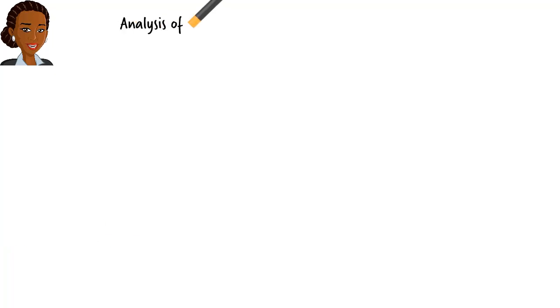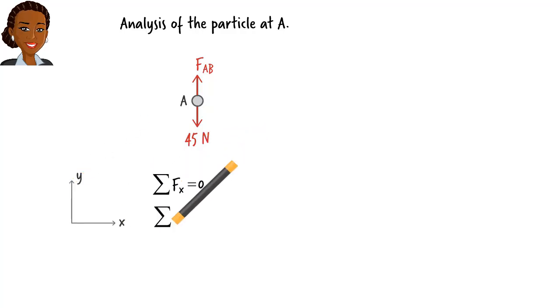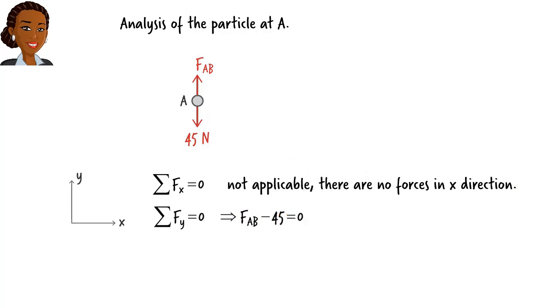Here is particle A and the forces that are acting on it. We have a downward force of 45 Newtons, and an upward force with an unknown magnitude. This force represents the tension in rope AB. For the particle to be in equilibrium, the net force in Y direction must be zero. So we can write... Solving this equation for the unknown force, we get FAB equals 45 Newtons. That is, tension in segment AB is 45 Newtons. This is rather obvious, since if the pot weighs 45 Newtons, then we need a force of 45 Newtons in the rope to hold the pot in place.